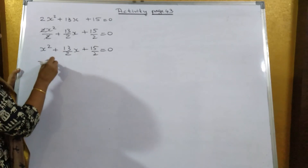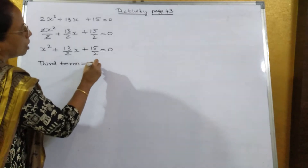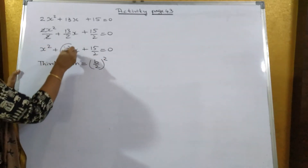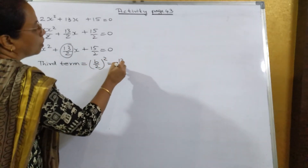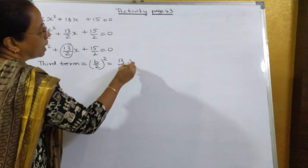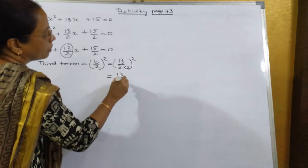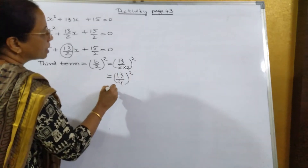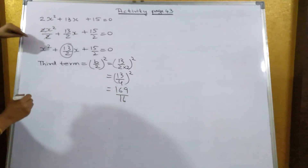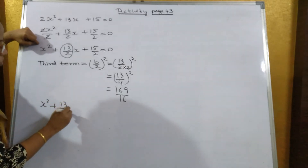Now find out the third term. What is the formula of the third term? It is (b/2)². Over here b is 13 upon 2, so that is equal to 13 upon 2 divided by 2, which gives 13 upon 4. Take the square, so that's equal to 169 upon 16.